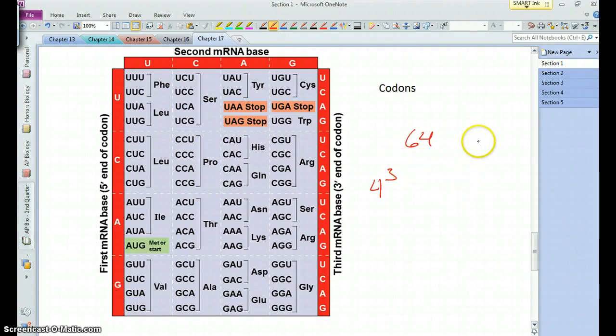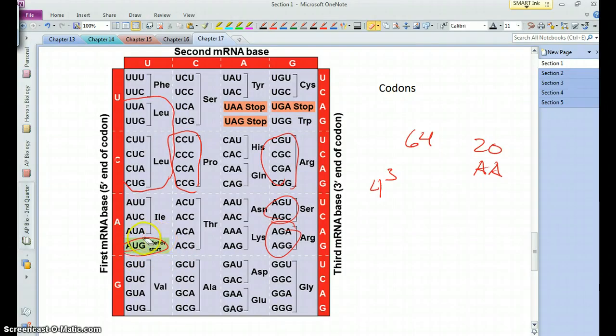But there's only, of course, 20 amino acids, so there's a lot of repetition in the code. For example, you can see there's six different codons that code for leucine. There are these four that code for proline, arginine has these four and then these two. Serine looks like it has two. You can see some have two, some have four, some have six. Methionine, as far as I can tell, is the only one that has one codon, and then of course we have our three stop codons.